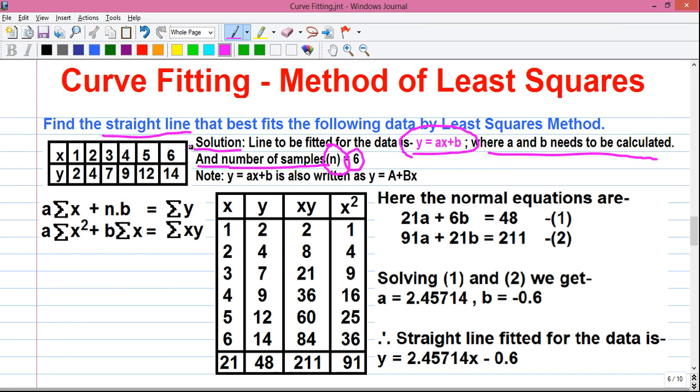The number of samples is 6 because we have total 6 pairs of x, y values. These are our first pair, the second, third, fourth, fifth and sixth. So the number of samples is 6. And one note for you, y = ax + b is also written as y = a + bx. I have explained this representation in my fifth and sixth video on curve fitting, that is on my curve fitting calculator tutorials.